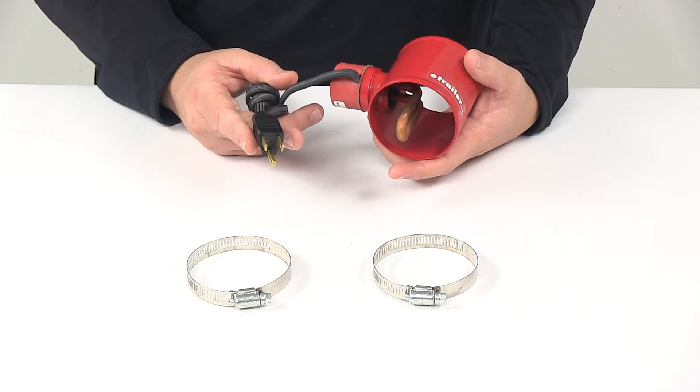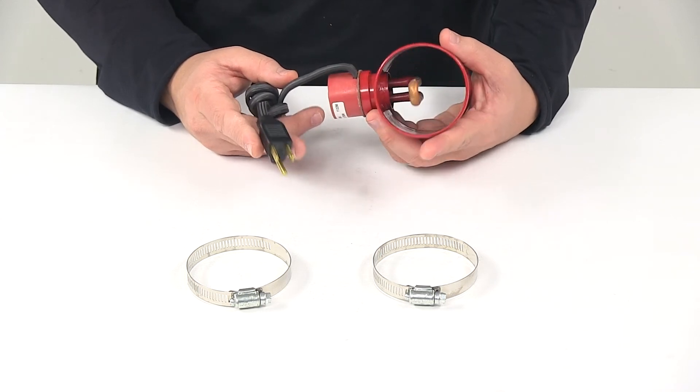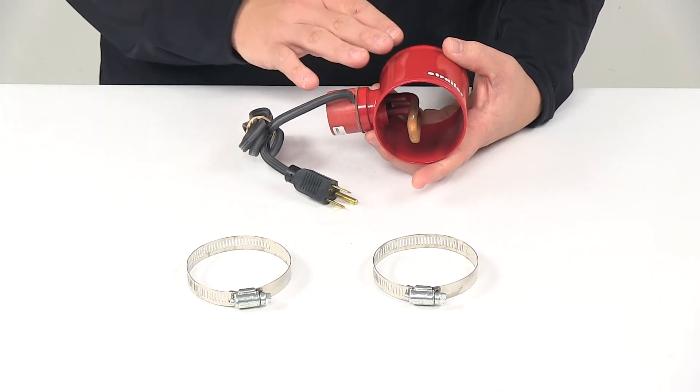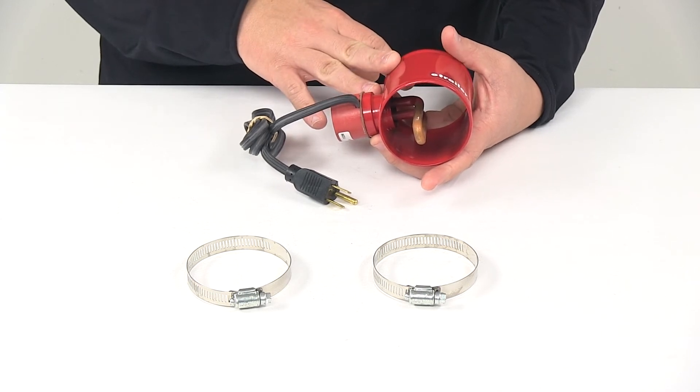The installation is pretty straightforward and simple. You simply use the included hose clamps, and this is designed for a three-inch diameter lower radiator hose.